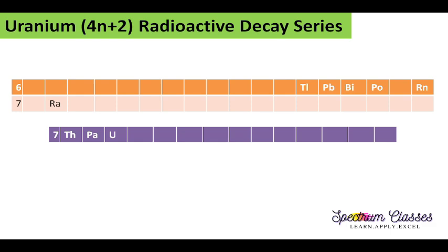We will also see how many steps occur in this uranium radioactive decay series. For this purpose we need to memorize a certain number of elements of the periodic table. The uranium radioactive decay series is given in branching form, but here I am just going to follow the major steps.